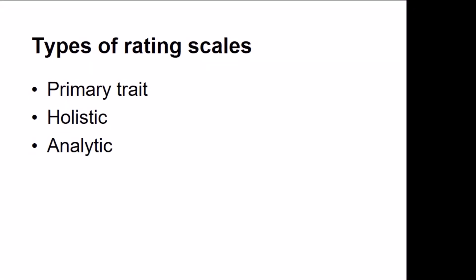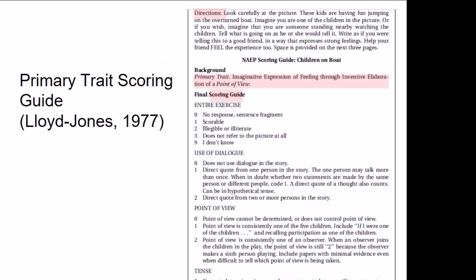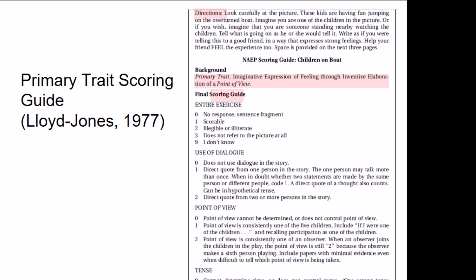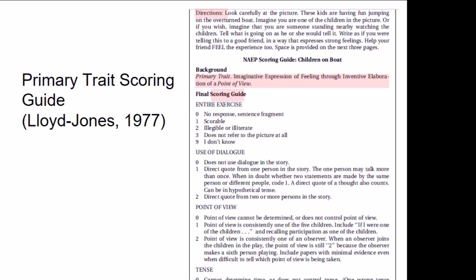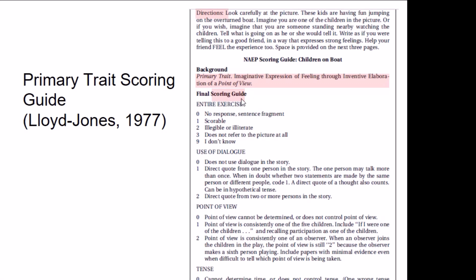How many rating scales are there? At least three, as I mentioned before: the primary trait scale, the holistic scale, and the analytical scale. Let me quickly present some examples to show how these would look like and what they mean. This is from Weigel's book, which has been taken from Lloyd Jones 1977. It might be a bit old, but it's a very good example of how the primary trait scoring guide looks like. You see you have a direction, you have a background, you have a final score guide.